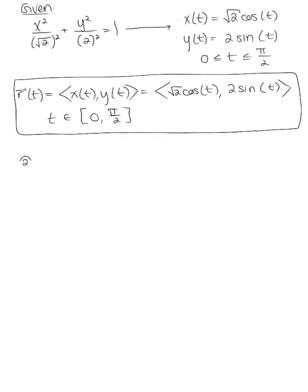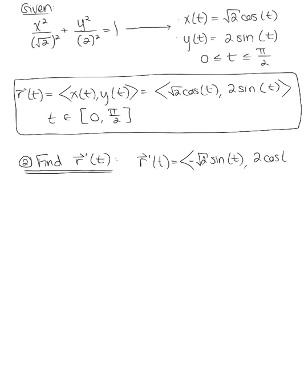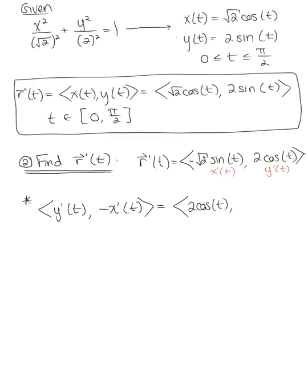We use this parameterization to find the tangent vector. r'(t) = (-√2·sin(t), 2·cos(t)). Since we're finding a flux integral, we won't use the exact tangent vector, but we do use its components x'(t) and y'(t) to define the vector (y'(t), -x'(t)). So the vector we'll use in our dot product is (2·cos(t), √2·sin(t)).